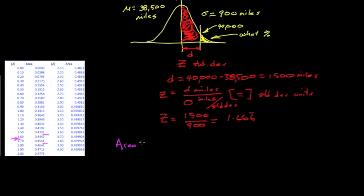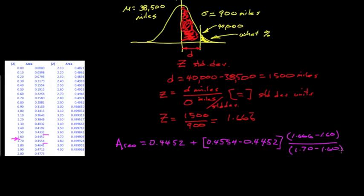In other words, the area that would correspond to the Z value would be the smaller number, 0.4452, plus the fraction of the interval represented by the area difference, 0.4554 minus 0.4452, times the fraction, and the fraction that we're interested in is the difference in the Z value we have for our particular problem and the lower value of Z, and the interval itself in the table, 1.6, 1.7 minus 1.6, okay, that should give us the fraction.